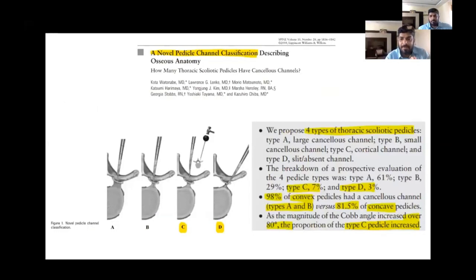This is a technique by Kota Watanabe — the channel technique. A large channel is type A, a smaller cancellous channel is type B, the cortical channel type C where we need to tap in case there is sclerosis, and type D is absent or slit channel. This classification is endorsed by the Italian surgeons.